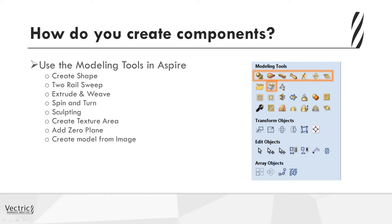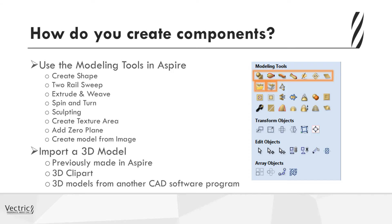We also have the ability to create a model from an image, which is good for generating component textures. An alternate way to bring in shapes is to import a 3D model — this may be something previously made in Aspire and saved out, a piece of 3D clip art purchased or downloaded from the internet, or a 3D model created in another CAD program that you want to bring in, finish, and then create toolpaths to cut on your CNC.